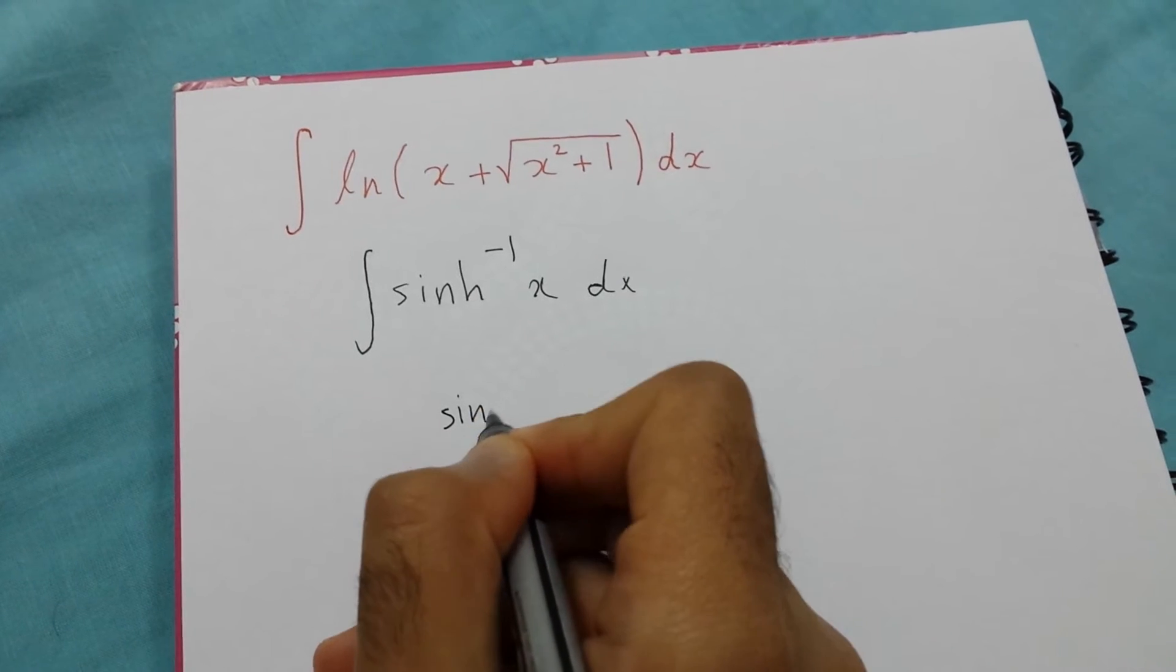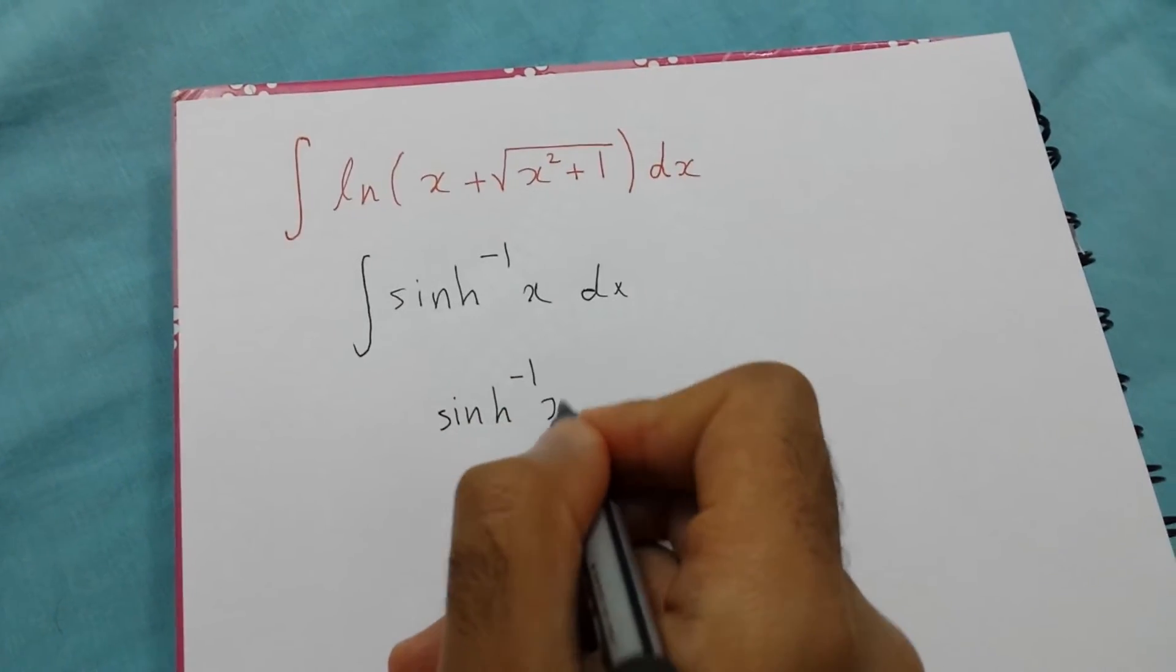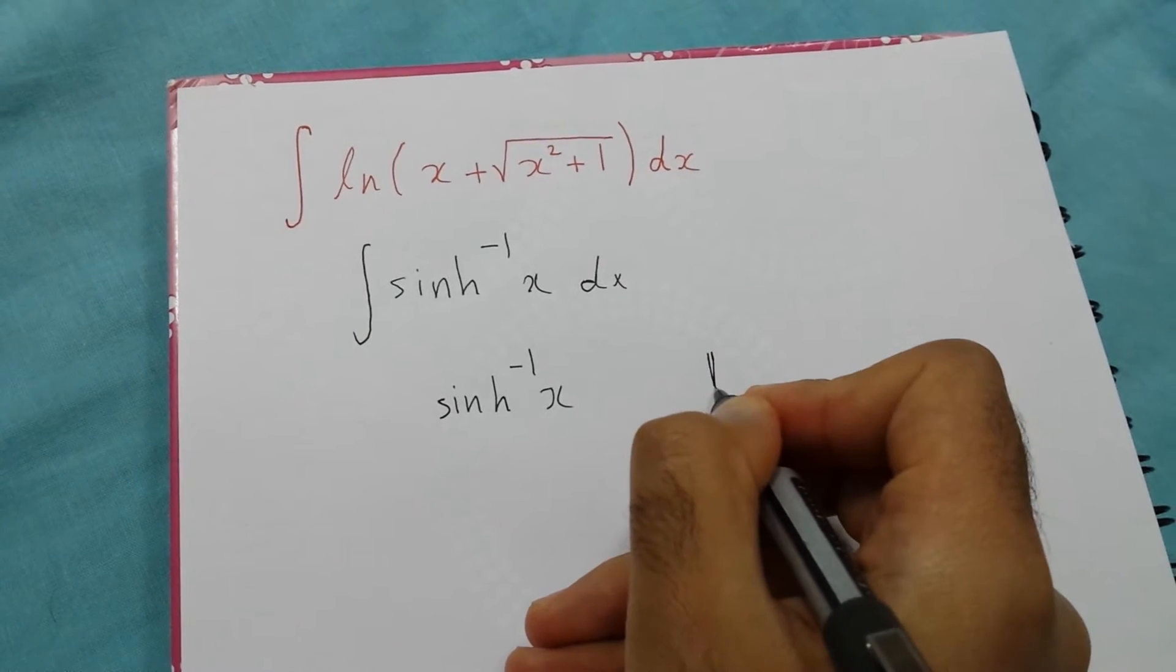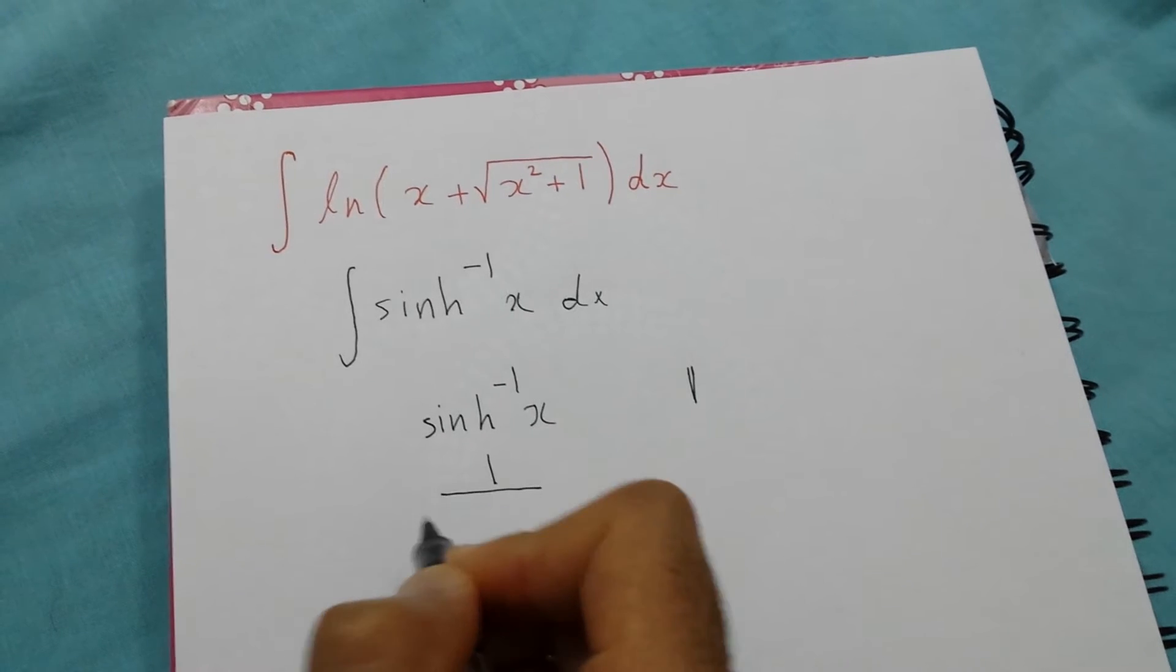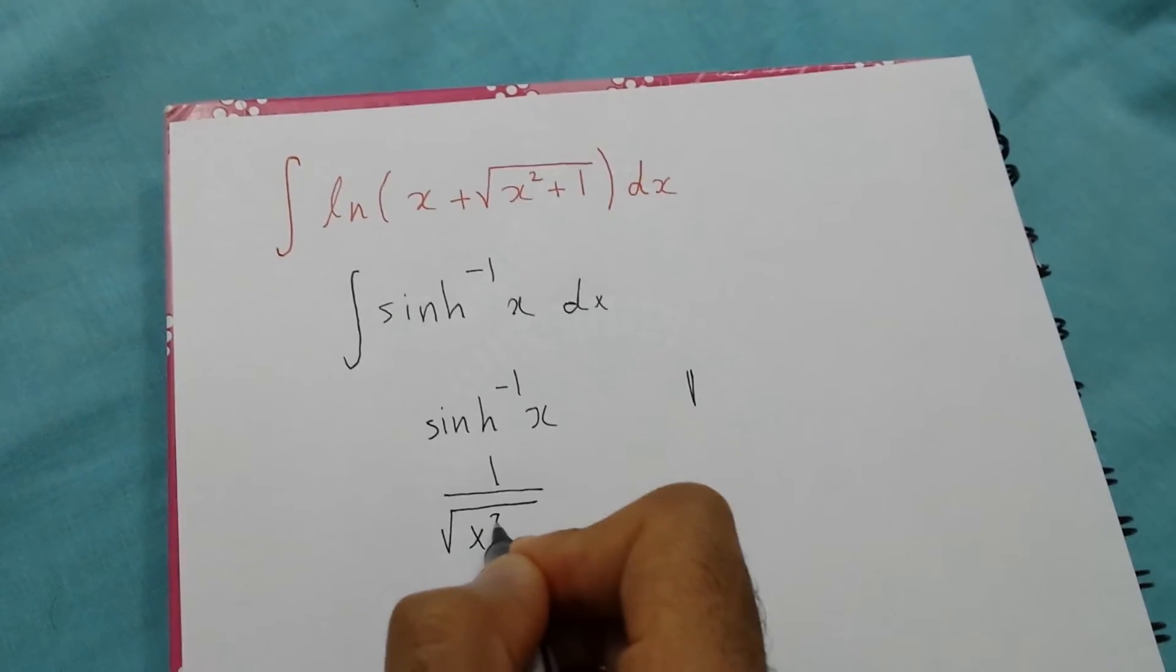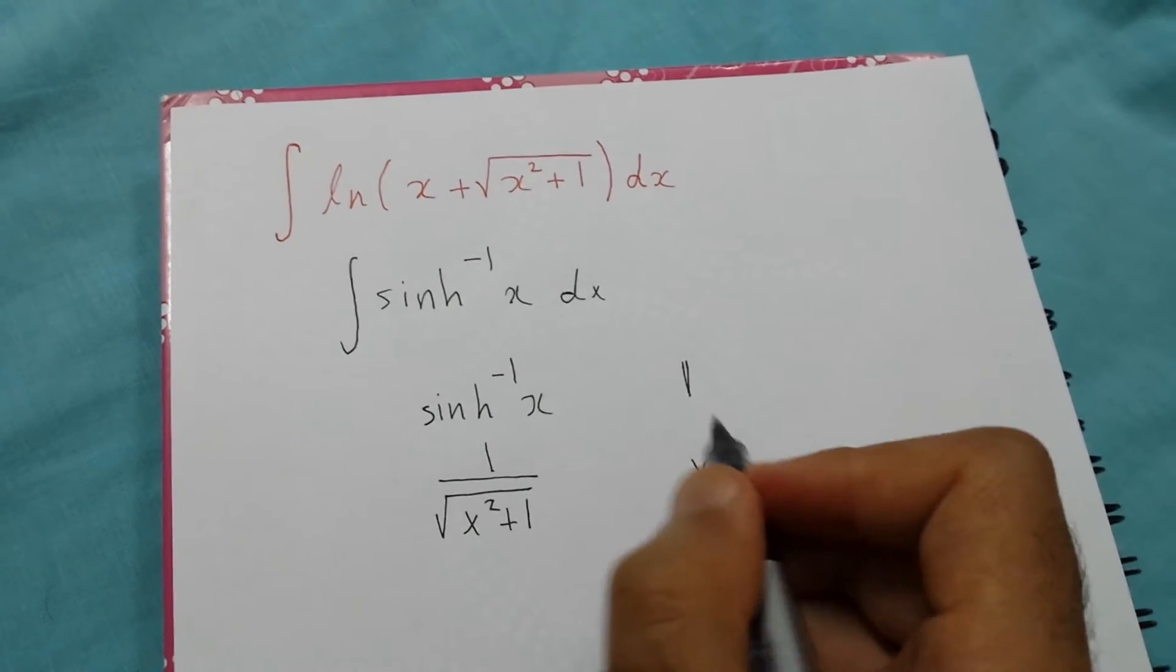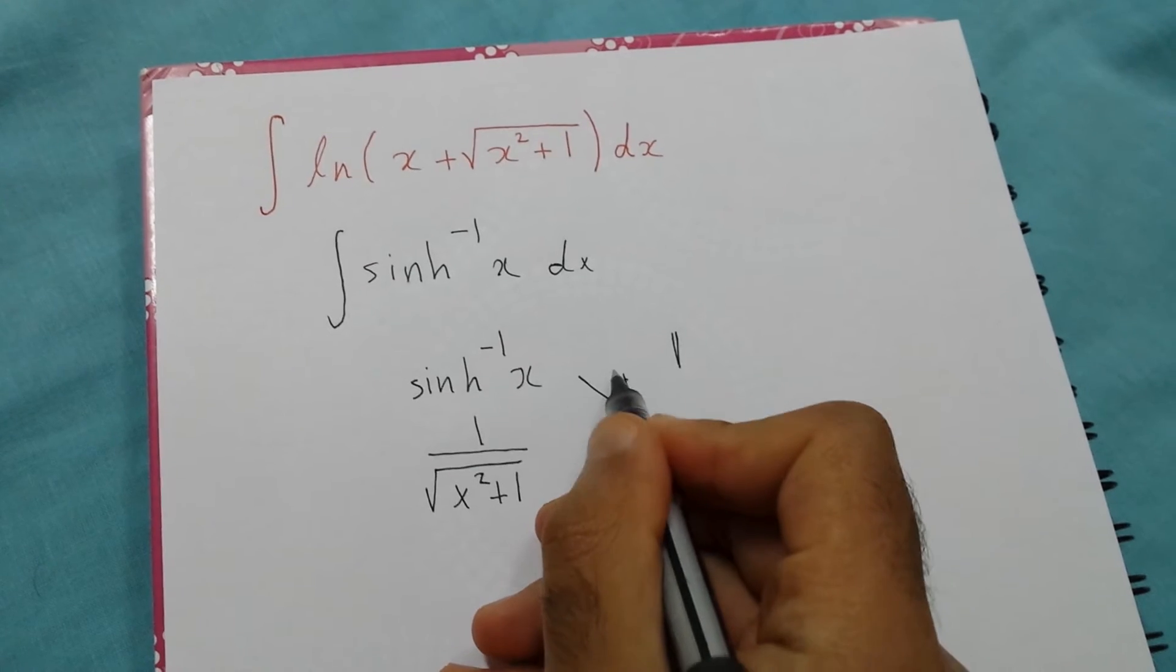Our u is sinh⁻¹(x) and dv is dx. So du will be the derivative of sinh⁻¹(x), which is 1/√(x²+1)dx, and v is the integral of 1, which is x.